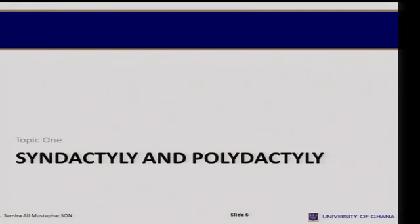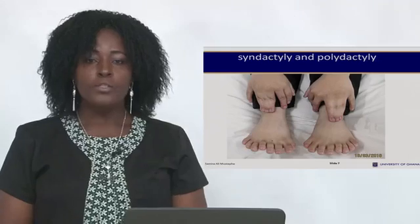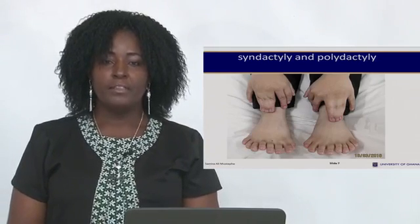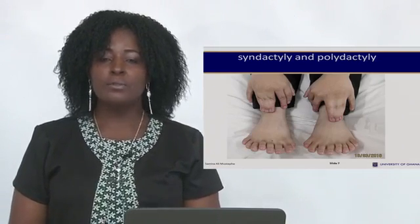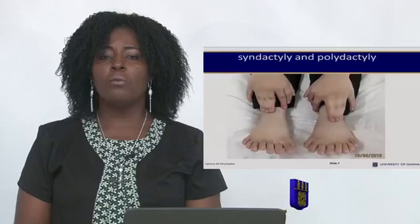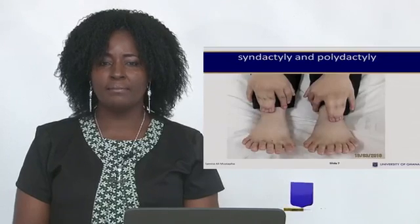We are looking at syndactyly and polydactyly together. Looking at this picture of the toes, you can see that the child has more than five digits, and that is what we call polydactyly.